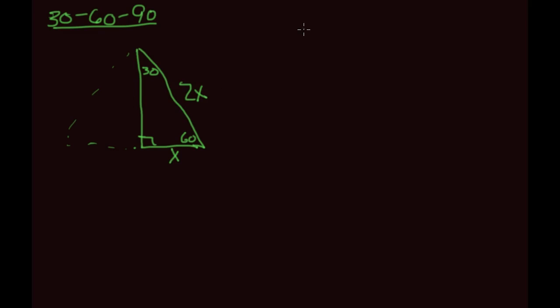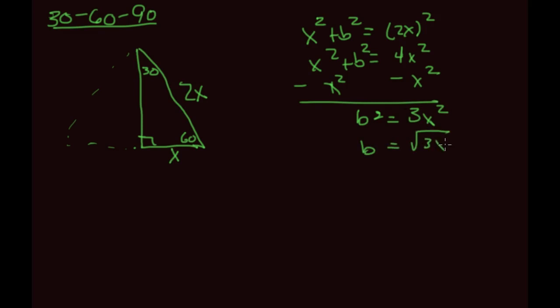Let's think about this. If I had x squared plus b squared is equal to 2x squared, means x squared plus b squared is 4x squared. Subtract the x squared from both sides. b squared is 3x squared. Take the square root of both sides. So that's just going to be x times the square root of 3.